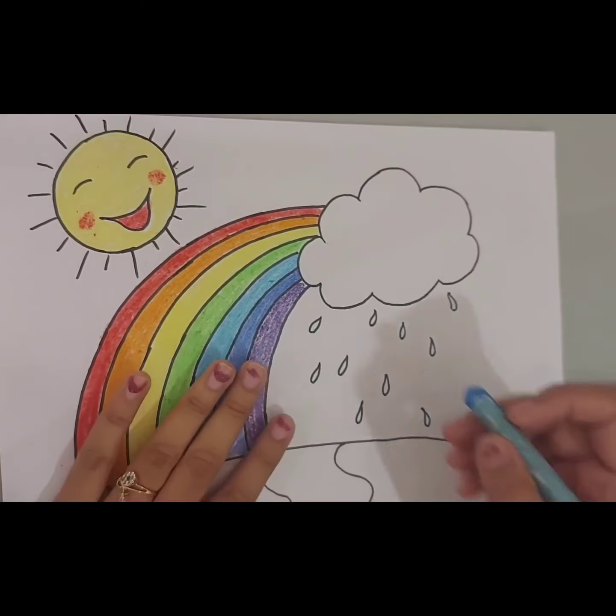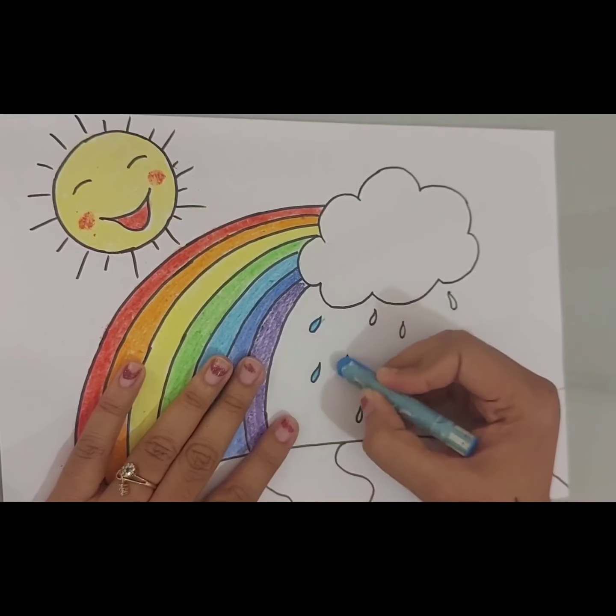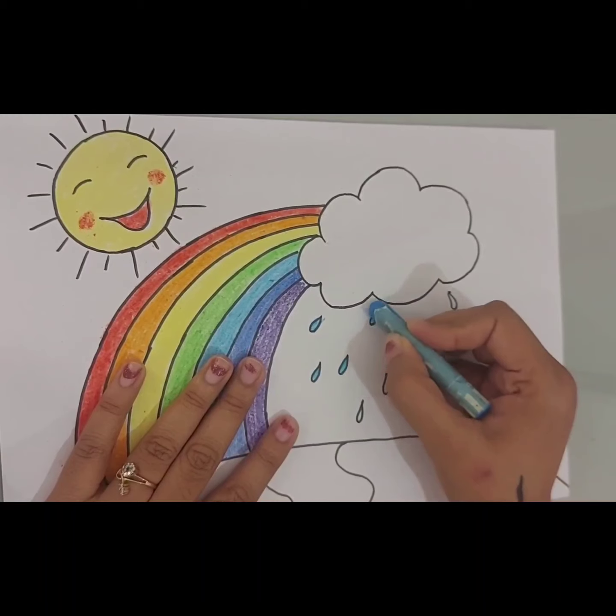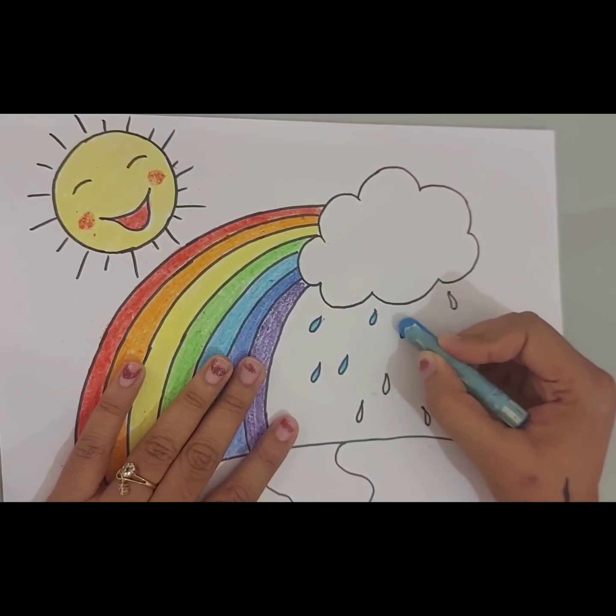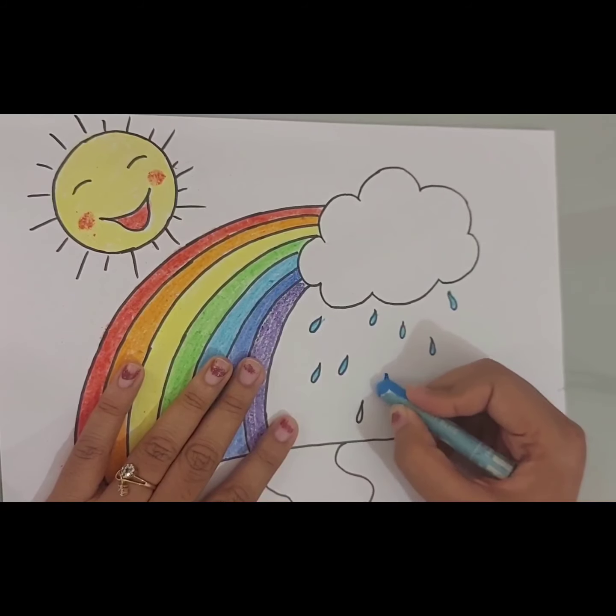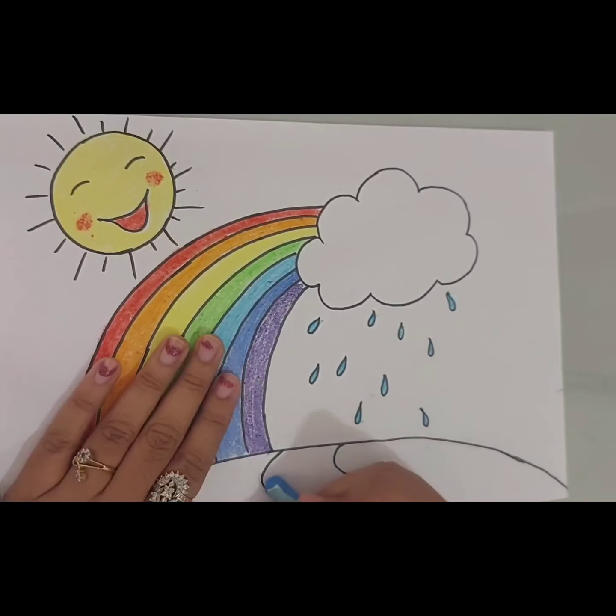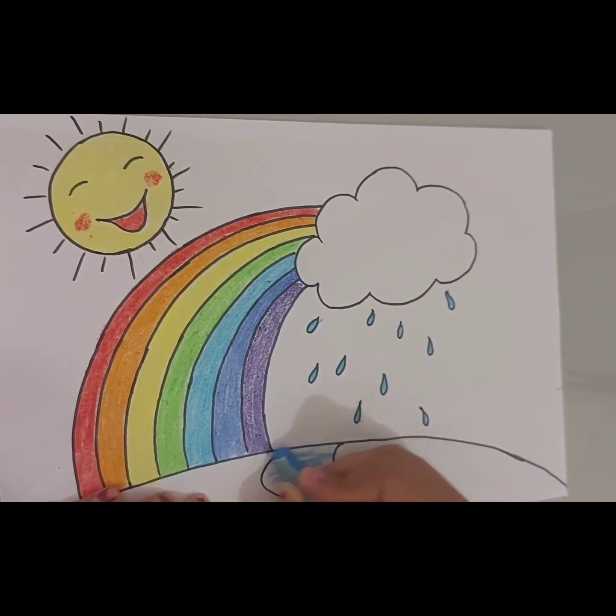Now, we will do blue color in water droplets. These water droplets are showing the rain. And here, I am making a pond, little pond.